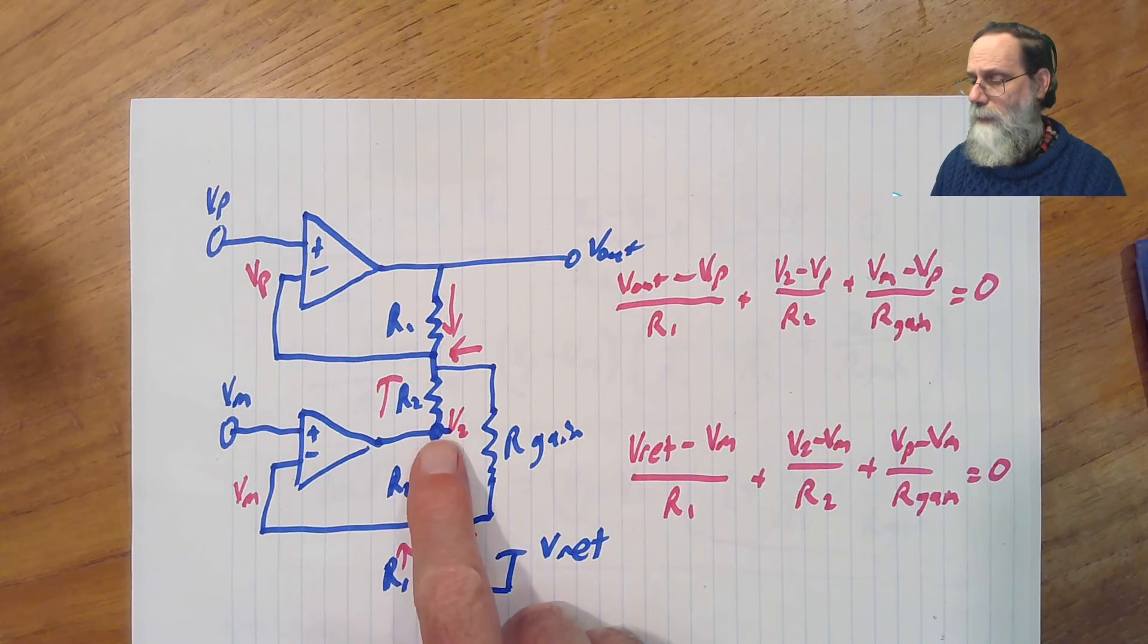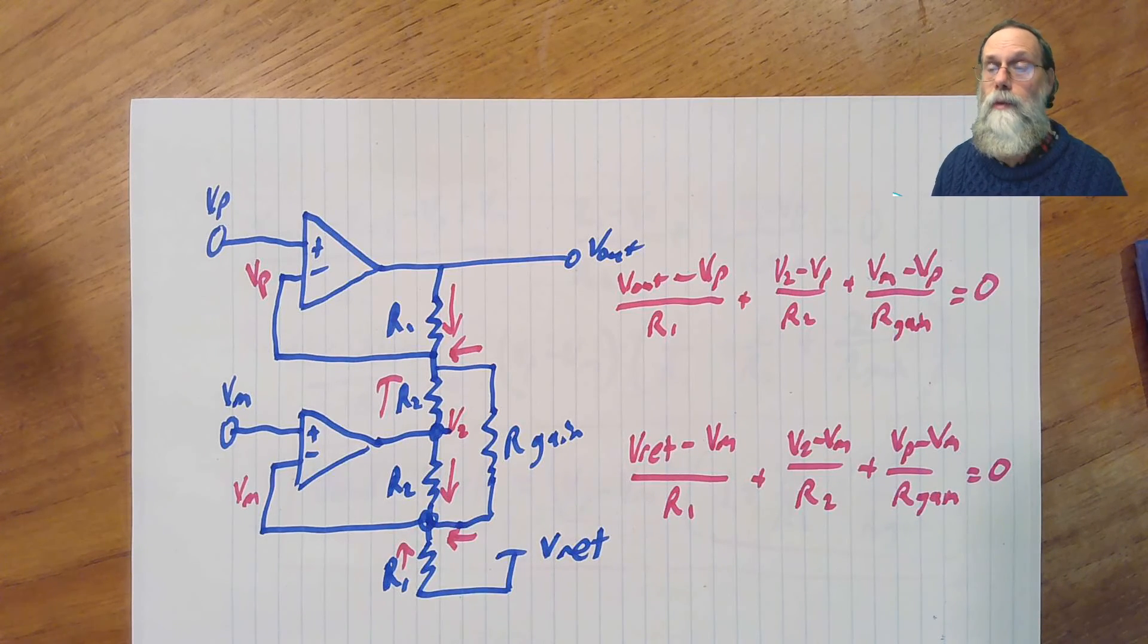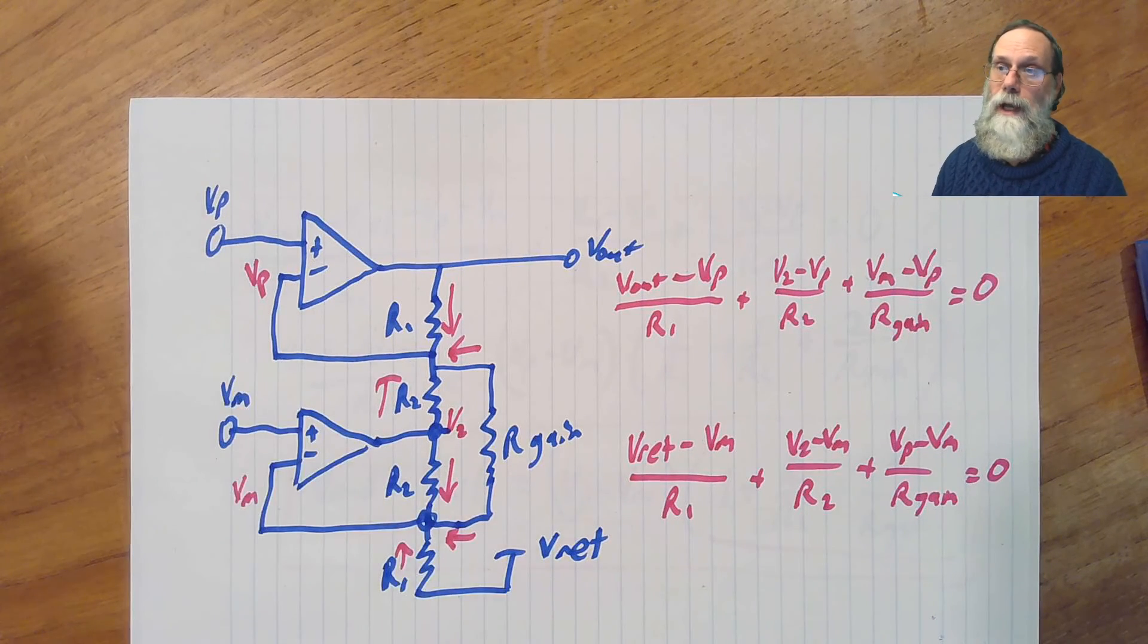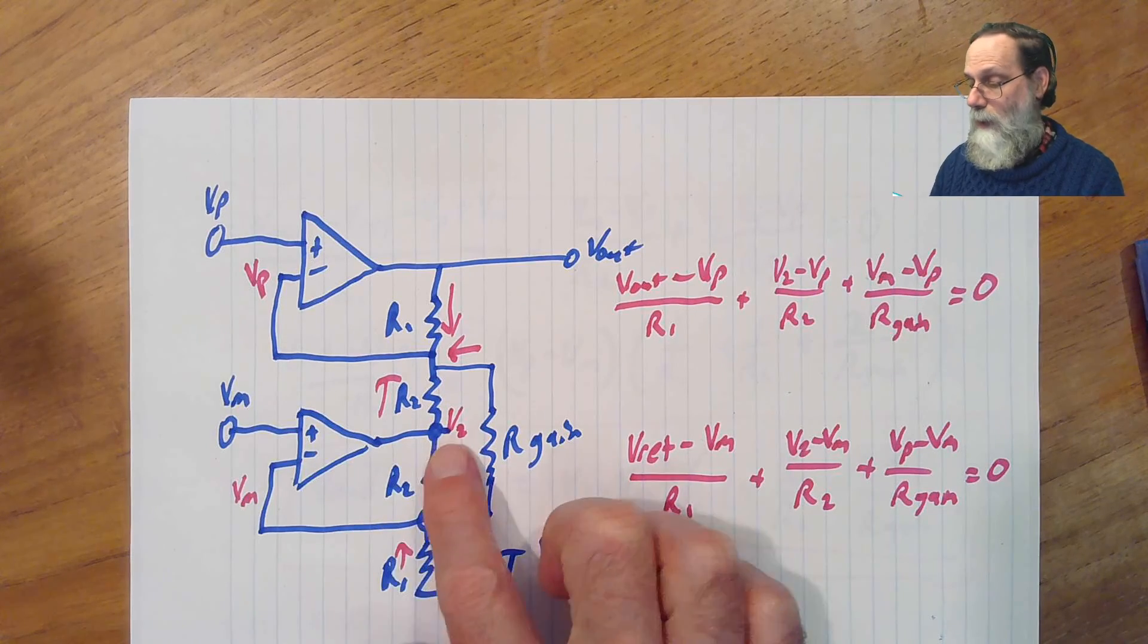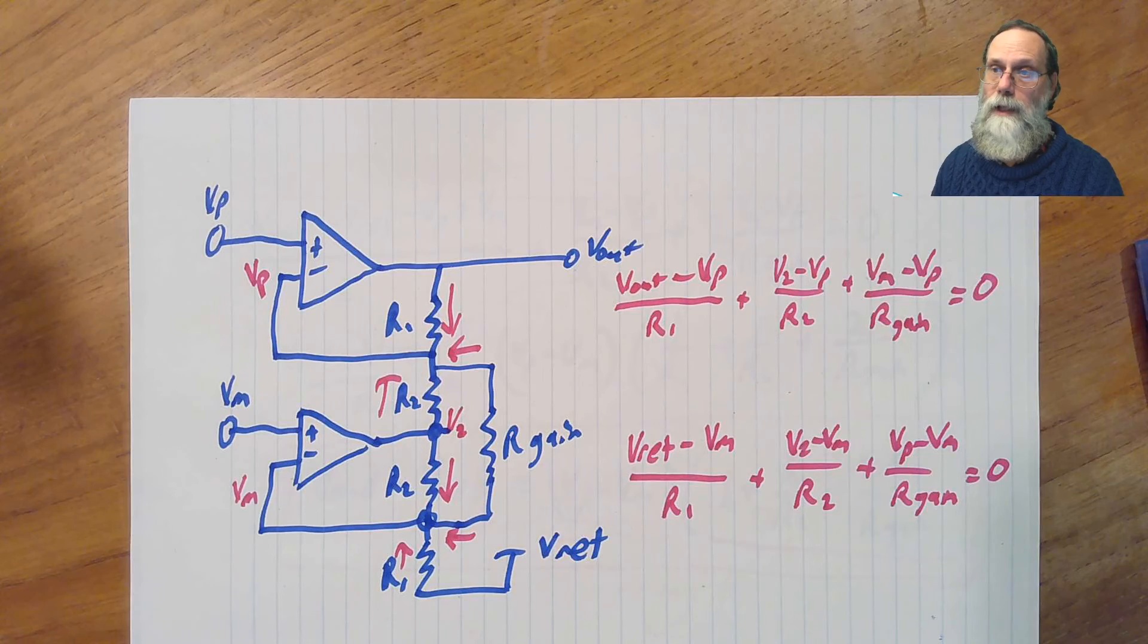You do need to be aware of this a little bit in that if you have a large common mode, just like when you have a large common mode with the 3 op amp instrumentation amplifier, that limits the range that you can have for your differential signal. And you can get, if you pick too big a common mode, you can get to the point where this node starts clipping even though the output node doesn't look like it would clip. So you do have to be just a little bit careful.